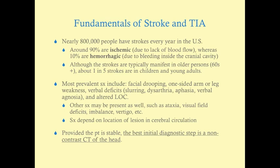Other symptoms can be present as well, particularly in stroke syndromes occurring in the posterior circulation — such as ataxia, imbalance, visual field deficits, and vertigo. The symptoms depend on the location in the cerebral circulation. Provided the patient is stable, the best initial step is a non-contrast CT of the head, which helps distinguish whether the stroke is ischemic or hemorrhagic.